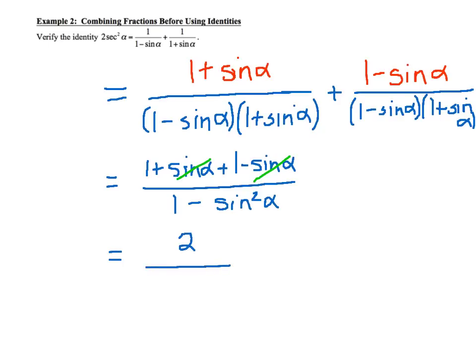Now, if you remember correctly from your Pythagorean identities, we know that sine squared alpha plus cosine squared alpha is equal to 1.